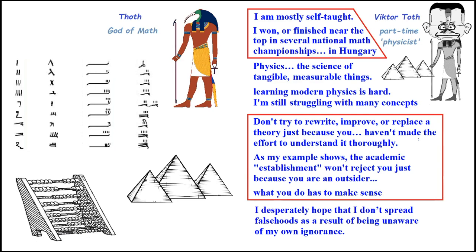As my example shows, the academic establishment won't reject you just because you are an outsider. What you do has to make sense. Maybe the issue here is that because he agrees with the establishment, they haven't kicked him out, even though he doesn't have a degree. He's self-taught. That means he doesn't have a degree, which is very important in mathematics.